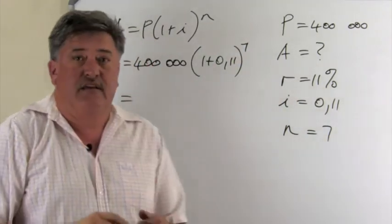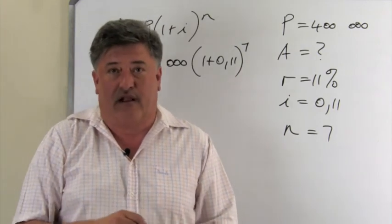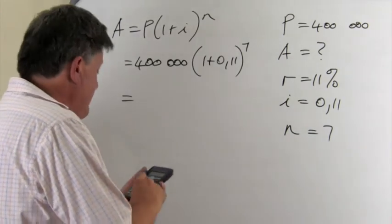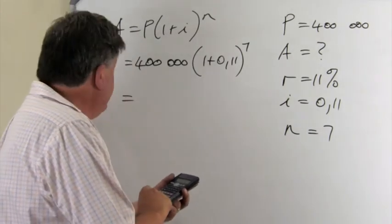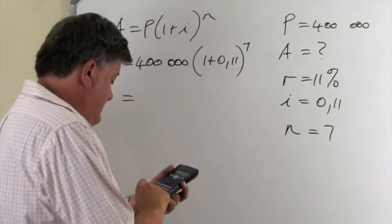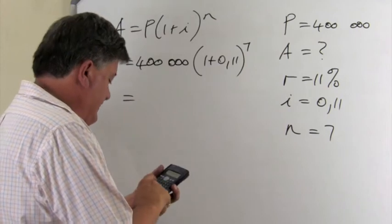And as you can see, it's a very straightforward compound interest calculation on our calculators. So let's use the calculator. So we say 400,000 times by 1 plus 0.11, and we raise it to the exponent of 7.